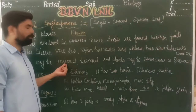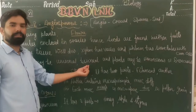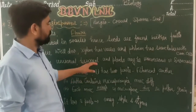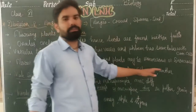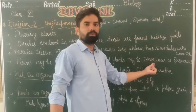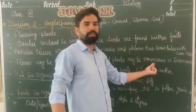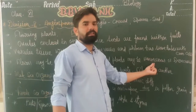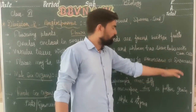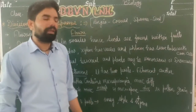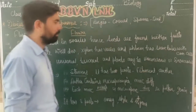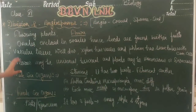Regarding sex organs — flowers may be bisexual, meaning they carry both male and female organs. Plants may be monoecious or dioecious. Monoecious plants contain both male and female parts in the same flower. Dioecious plants carry either only female or only male parts.